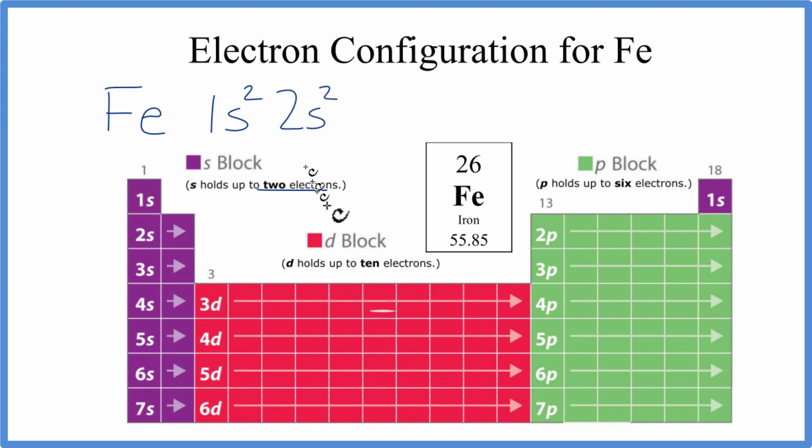So we've used 4 electrons. We have 26 total. From the 2s, we go over to the 2p. 2p can hold up to 6, so we'll put 6 in here. We've used 10.